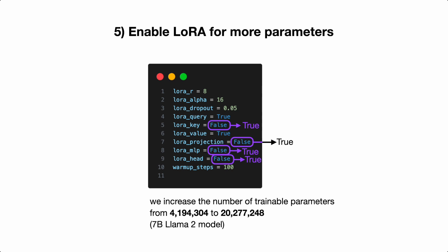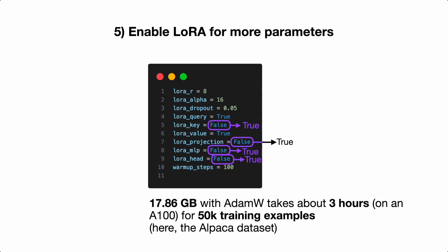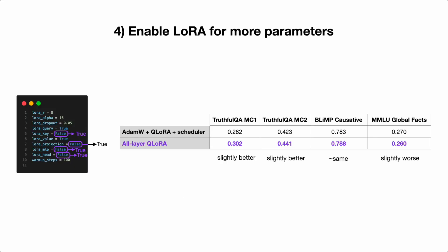What happens if we enable LoRA for more parameters in the network — activating it also for the key projection, linear layers, and projection head? We increase the number of trainable parameters from 4 million to 20 million, a five-times increase. Memory usage goes from about 14 gigabytes to 17.8 gigabytes — a 3 gigabyte increase — and training takes about 3 hours. The results are slightly better on most benchmarks, but slightly worse on one. Overall it's a mixed bag, and just increasing parameters does not bring much benefit given the five-times parameter increase.